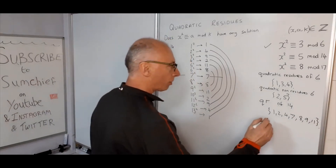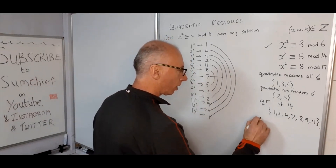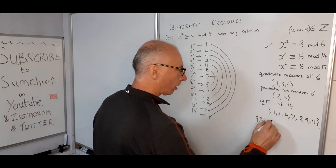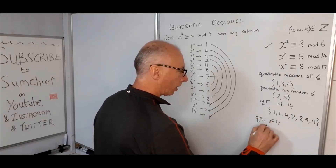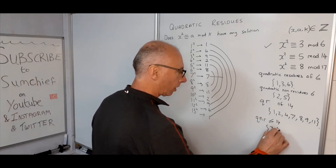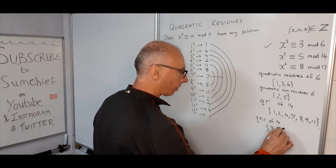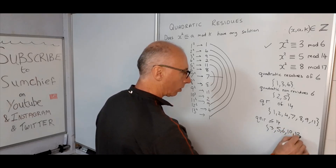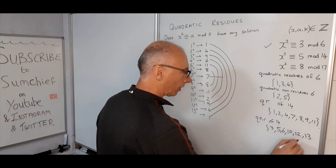And the quadratic non-residues of 14 are 3, 5, 6, 10, 12, and 13.